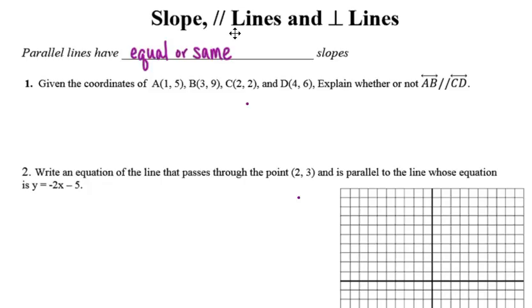In number one, we're given the coordinates of those four points and asked to explain whether or not the two lines are parallel. So we want to know is line AB parallel to line CD. What we're really looking to determine is whether or not these two lines have exactly the same slopes. So I'm going to use slopes to explain why or why not these two lines are parallel.